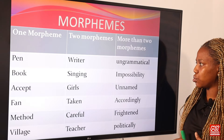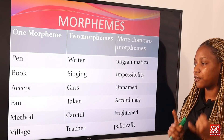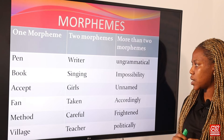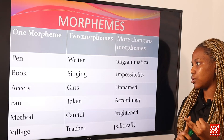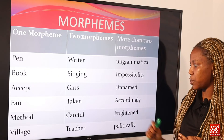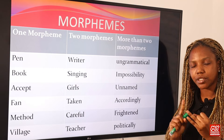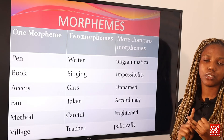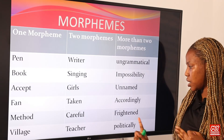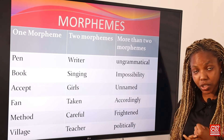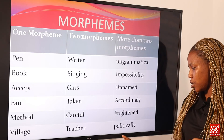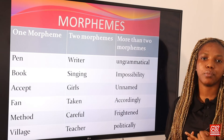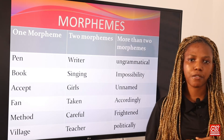Now let's take a look at morphemes that are more than two. We have 'ungrammatical': grammar is one, grammatical is two, ungrammatical is three. 'Impossibility': possible is one, possibility is two, impossibility is three. 'Unnamed': name is one, named is two, unnamed is three. 'Accordingly': accord is one, according is two, accordingly is three. 'Frightened': fright is one, frightened is two — three morphemes. 'Politically': politics is one, political is two, politically is three.